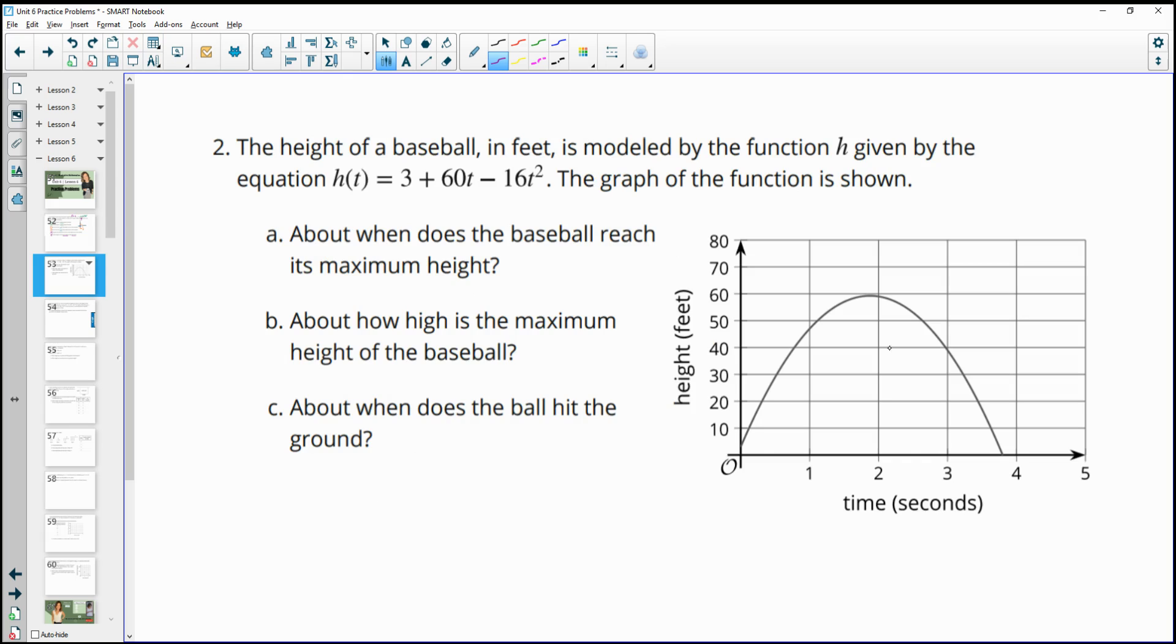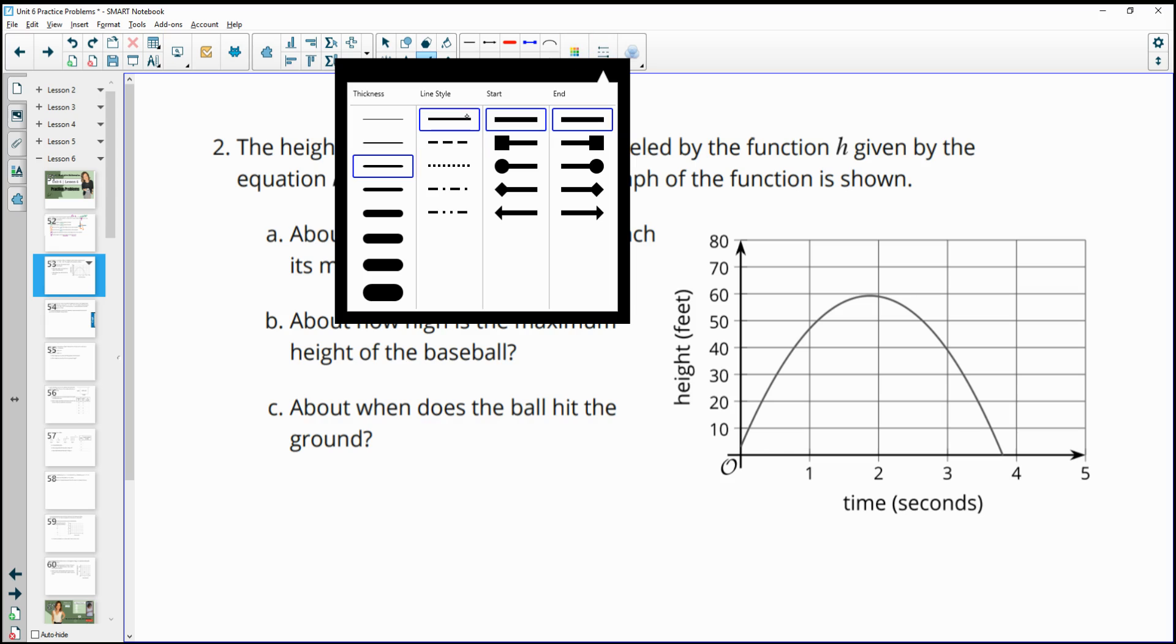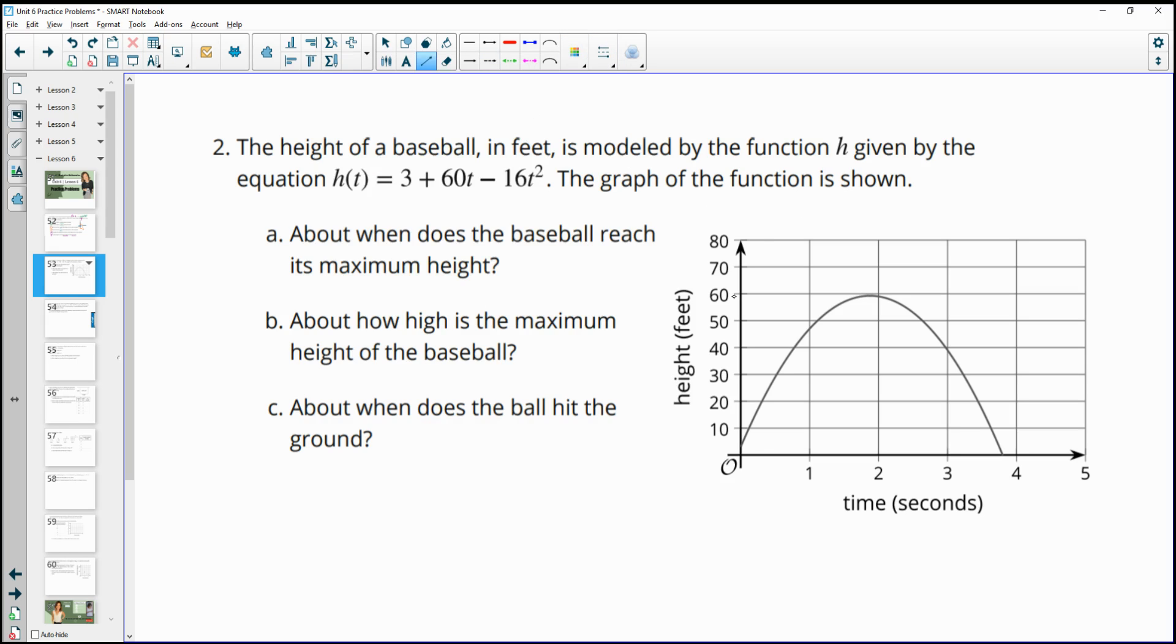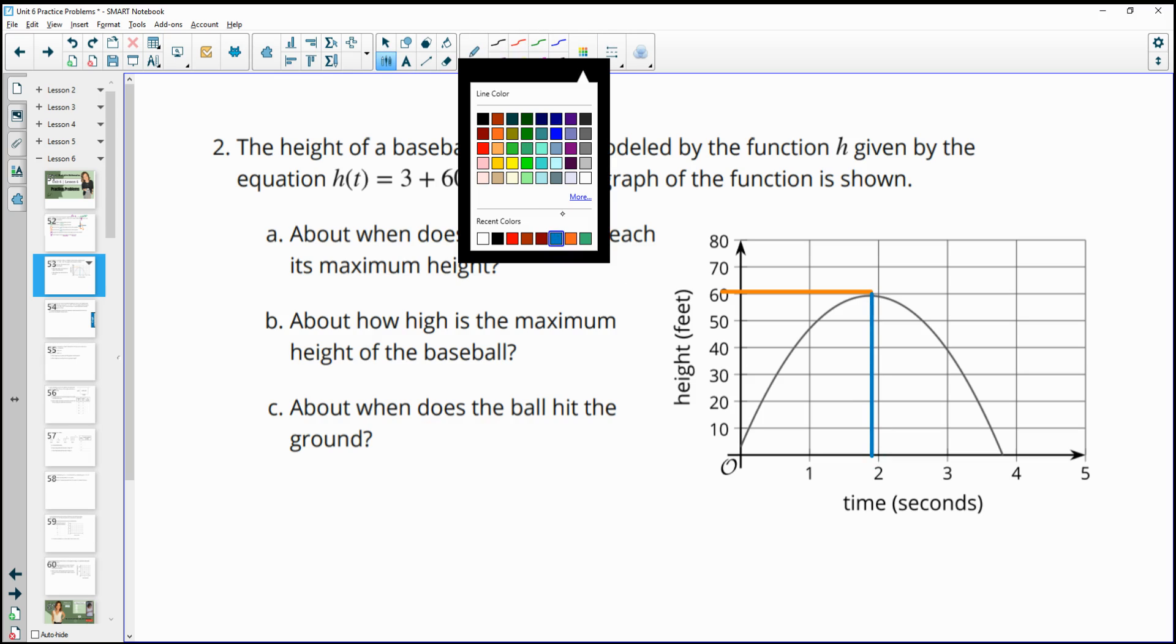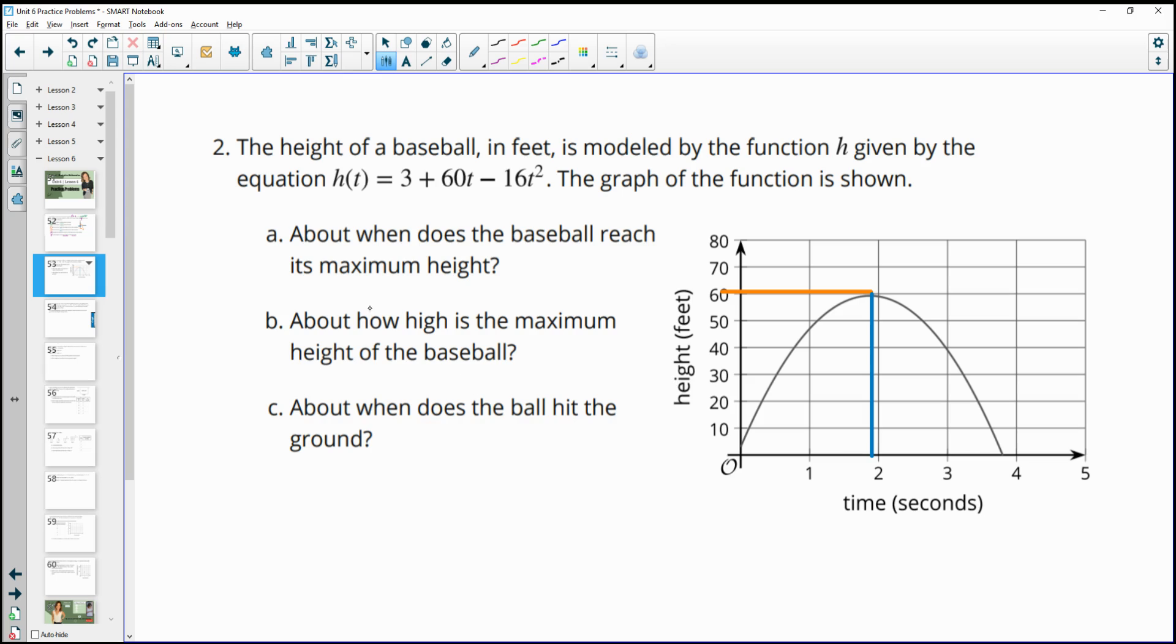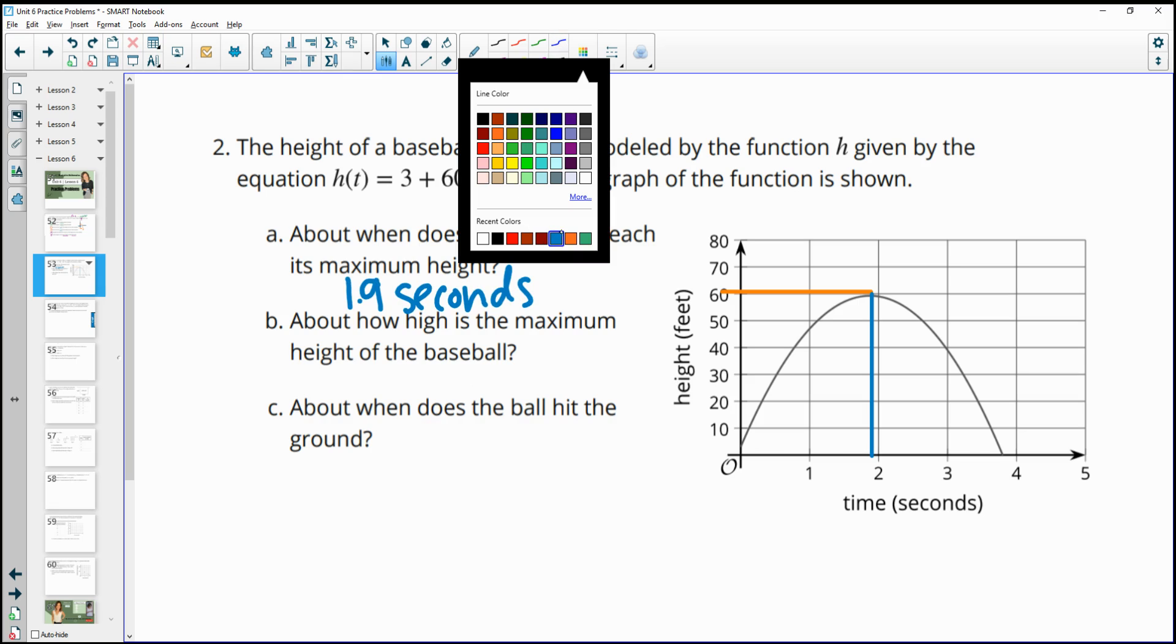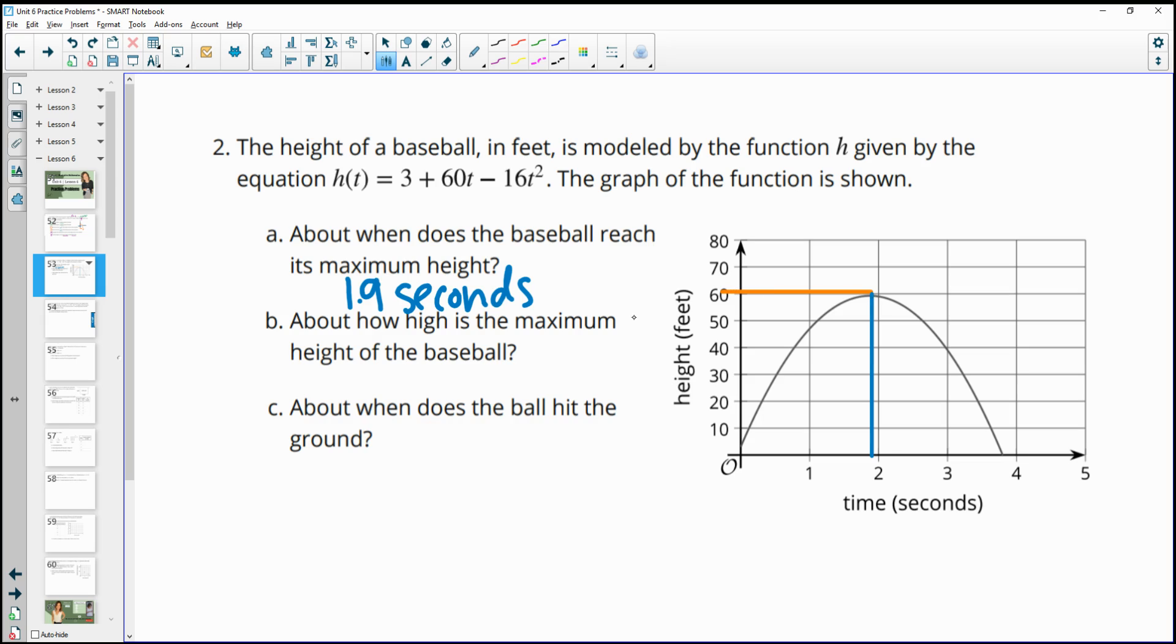Number two, the height of a baseball in feet is modeled by the function given here. And that graph is also shown to us about when does the ball reach its max height. So we can see this max height here. You know, it's about right here, right? So we can see the max height and then we can see when it happens. So the max height is happening about, I don't know, 1.8 seconds, right? 1.9. So something right before two seconds. So about 1.9 seconds. And then what is that max height? And so that's the vertical amount. And that's about 60 and we're measuring in feet. So 60 feet.